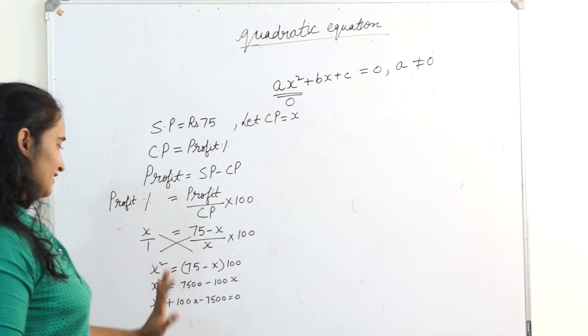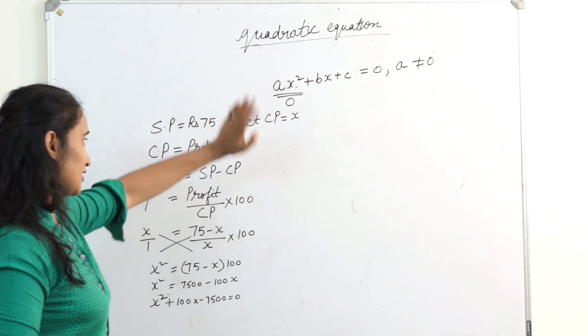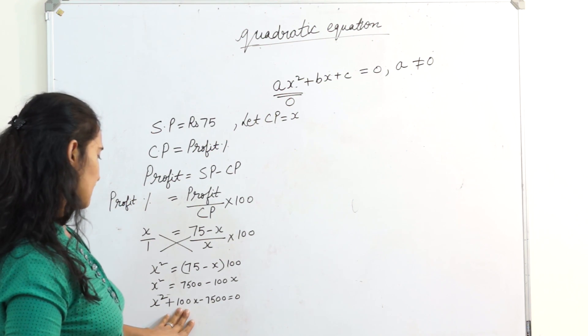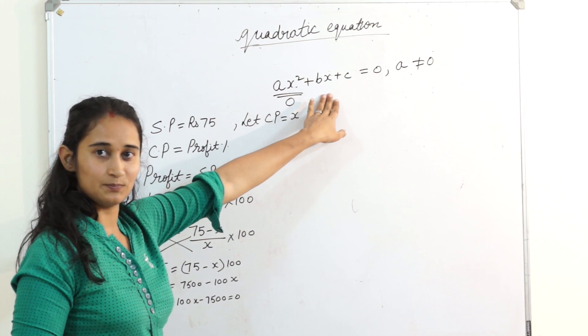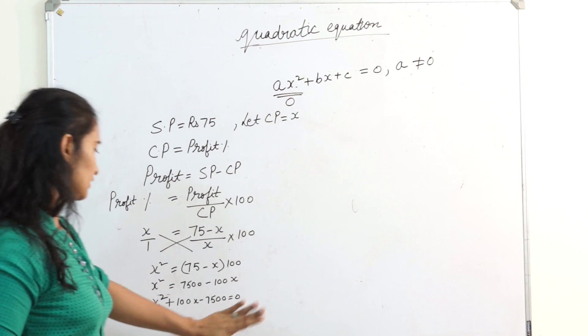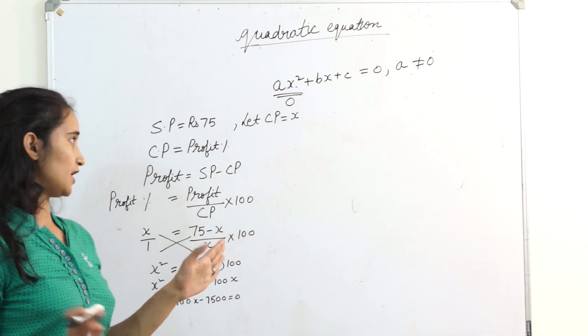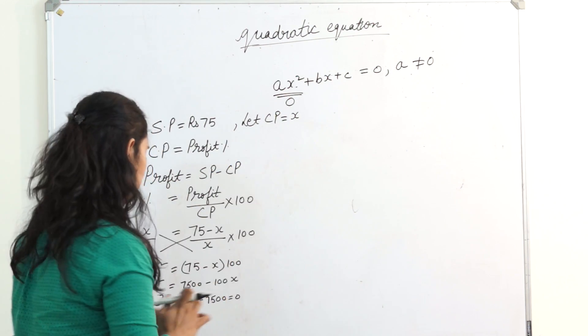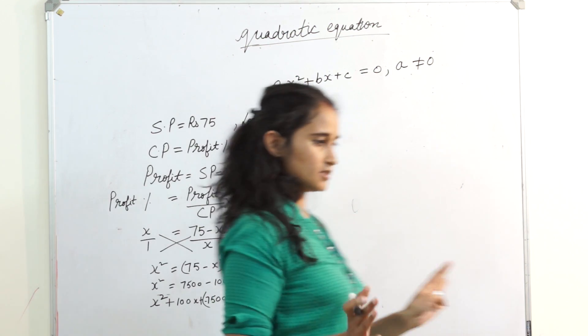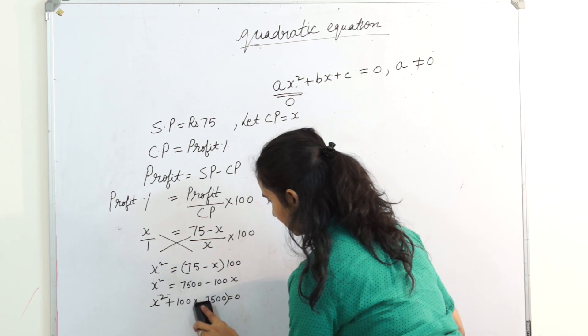Now, can you see x square? What is my coefficient here? a, here is 1 plus 100x, plus bx, b is 100, plus c. So this is minus 7500. It can be any sign. It's not hard and fast. We always assume it's positive. If I write a plus into minus, then also it makes sense. So I got my quadratic equation.